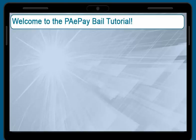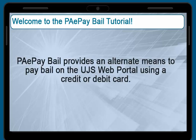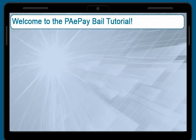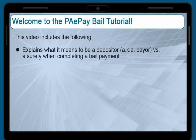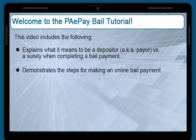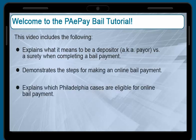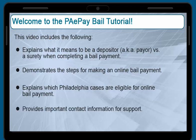Thank you for taking the time to view this how-to guide for making bail payments using PA ePayBail via the UJS web portal. PA ePayBail provides an alternate means to pay bail online from any computer using a credit or debit card. This video will explain what it means to be a depositor or payer versus a surety, walk you through the steps of how to make an online bail ePayment, explain what cases are eligible for bail ePay payments, and provide contact information for support.